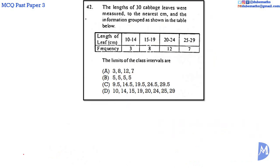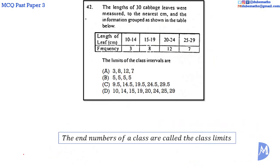Question 42. The numbers of a class are called the class limits. Thus the class limits are 10 14, 15 19 etc. The answer is D.